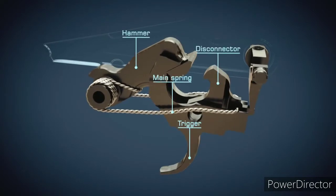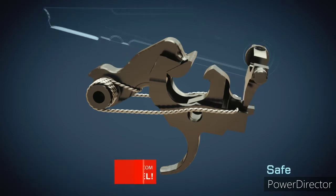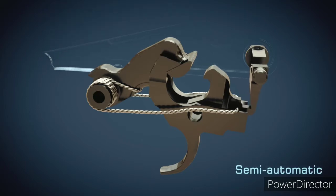In the middle position, the safety lever blocks the disconnector. In the uppermost position, trigger and disconnector are blocked. In the lowest position, trigger and disconnector can move freely.